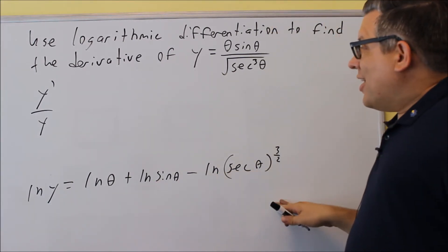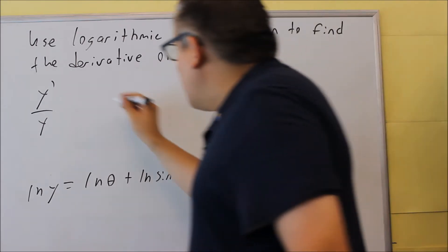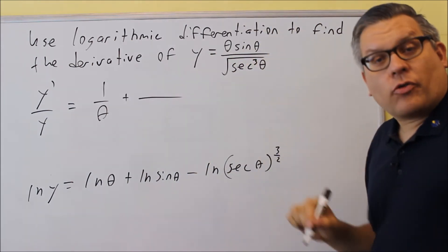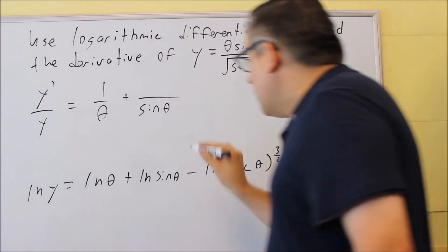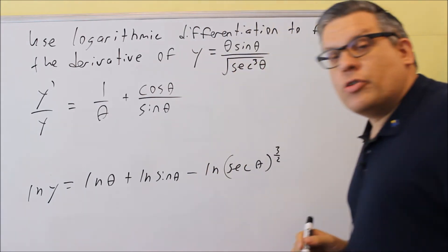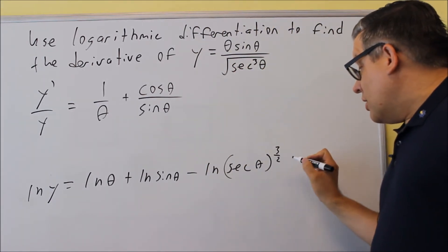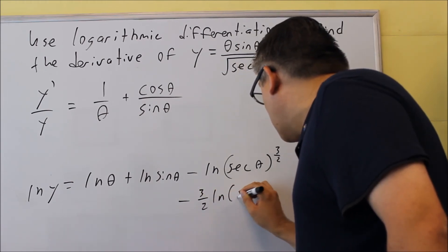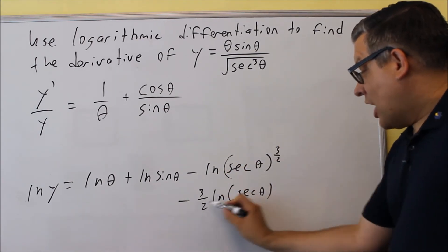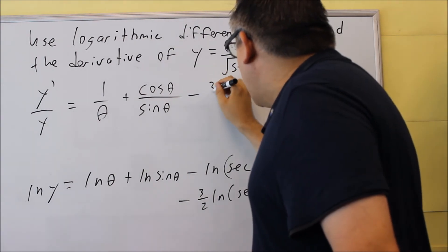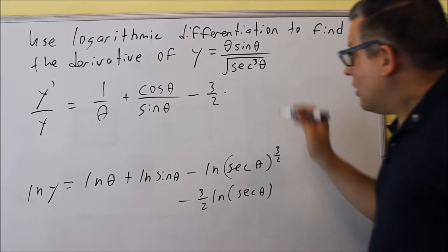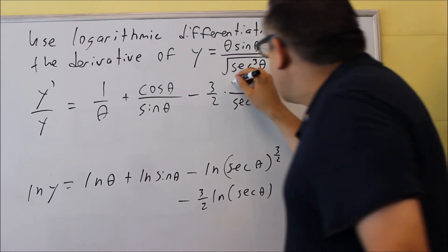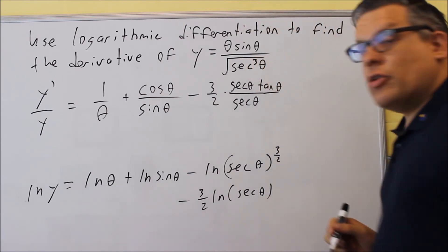Taking the derivative of each term with respect to theta: the derivative of ln theta is 1 over theta. For ln sine theta, using U-prime over U, the derivative of sine is cosine theta, giving cosine theta over sine theta. For the three-halves ln secant theta term, we first bring the three-halves down in front, then apply U-prime over U: the derivative of secant theta is secant theta tangent theta, so we get three-halves times secant theta tangent theta over secant theta.